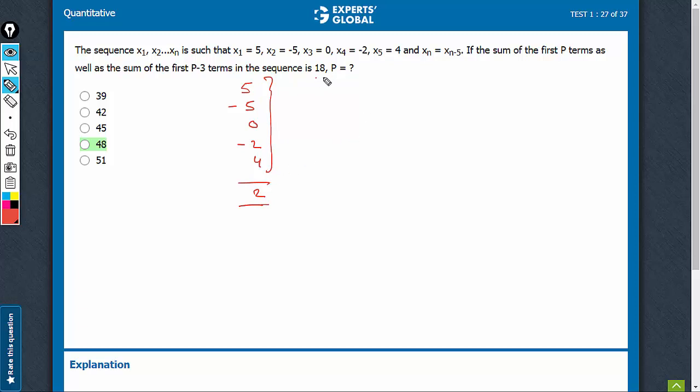Now, if the sum is 18, what must have happened? These five must have repeated themselves 9 times. So the sum of 45 terms is going to be 18.